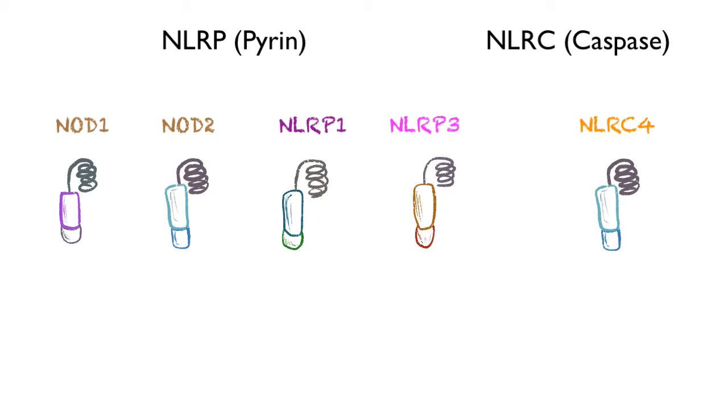Like NOD1 and NOD2, for example, sense muramyl dipeptide peptoglycans on the gram-negative and gram-positive bacteria, along with DAP.